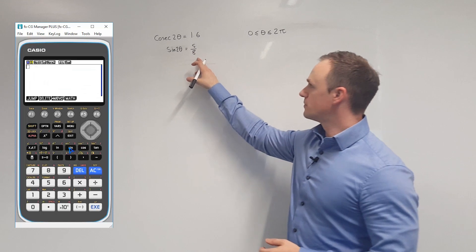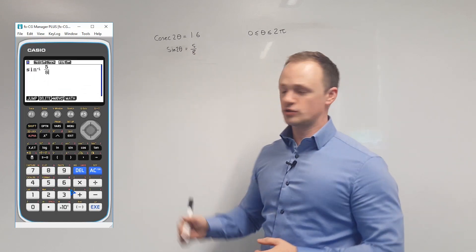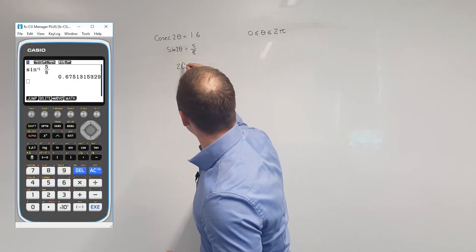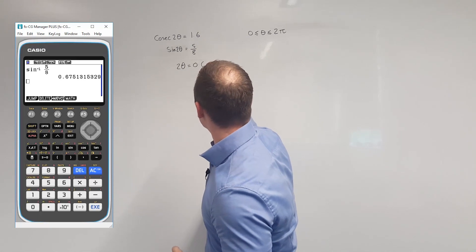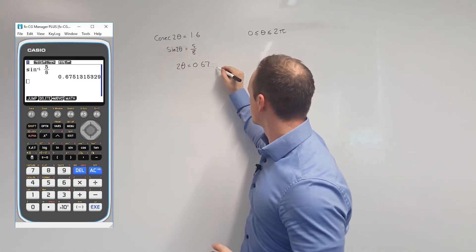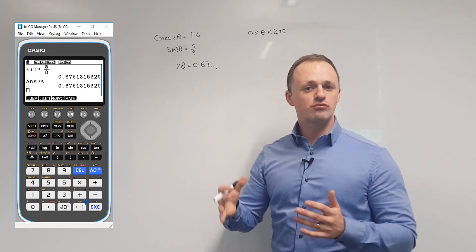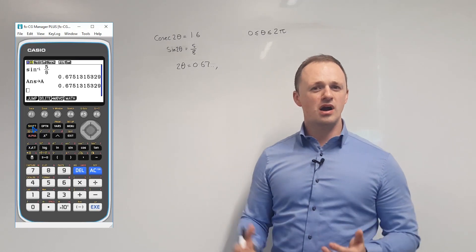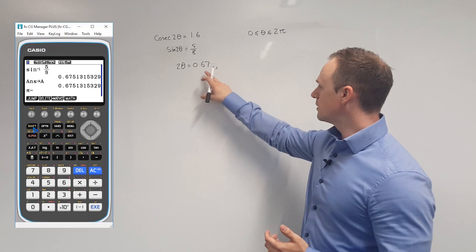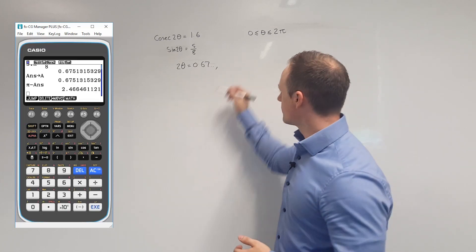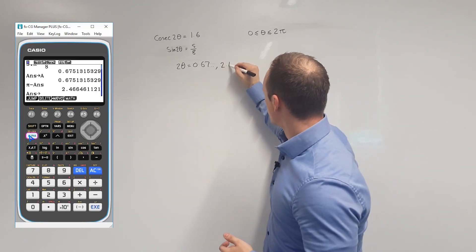Next, we're going to do inverse sine of 5 eighths to get a principal solution for 2θ. And if we do that, we get 2θ equals 0.67. To get a second solution in sine in radians this time, we're going to do π minus our first solution. If we do π minus 0.67, we get roughly 2.46.